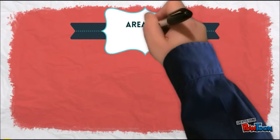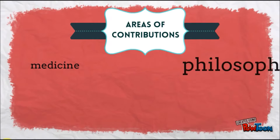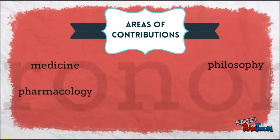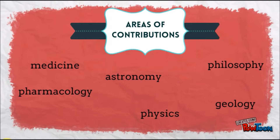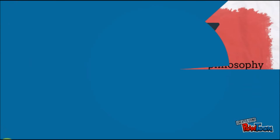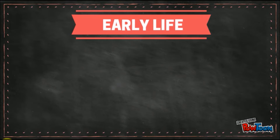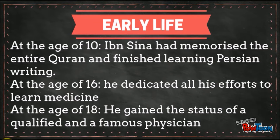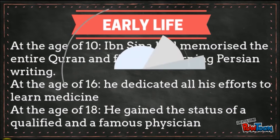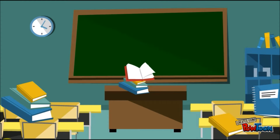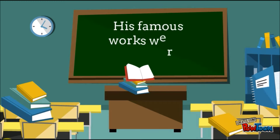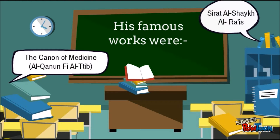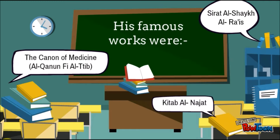Among his areas of contribution are medicine, philosophy, pharmacology, astronomy, geology, physics, and poetry. Regarding his early life, Ibn Sina received his early education and by the age of 16 dedicated all his efforts to learning medicine. By the time he was 18, he had gained the status of a famous physician. His famous works were the Canon of Medicine, Surah al-Shayt al-Ra'is, Kitab al-Najat, and Kitab al-Shifa.